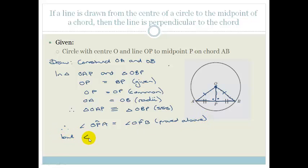But angle OPA plus angle OPB has to equal 180 degrees. Why? Because they are supplementary. They are on the same straight line. So therefore, angle OPA has to equal angle OPB, which equals 90 degrees.